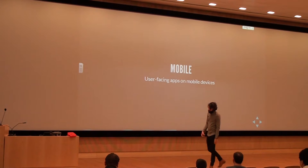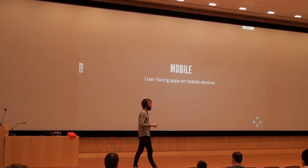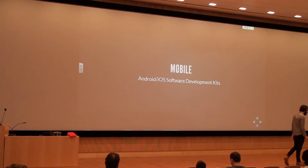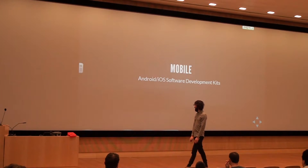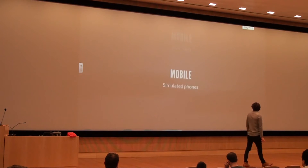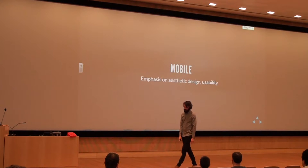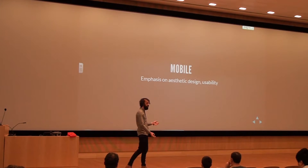Mobile developers create user-facing applications on mobile devices — not the operating system itself, but things like icons and app interfaces. They work with SDKs — Software Development Kits — which are pre-built tools for building Android and iOS applications. Programming languages include C++ for iOS and Java for Android. You can use emulators to simulate different screen sizes and hardware without having 300 phones in your closet. There's also an emphasis on visual aesthetic and design in this type of engineering.